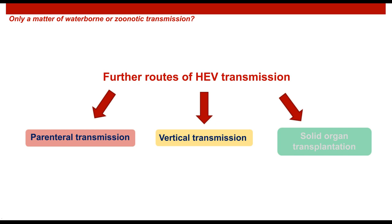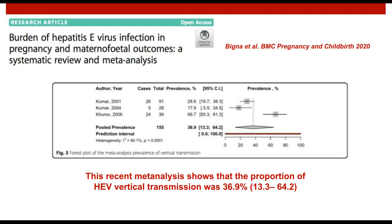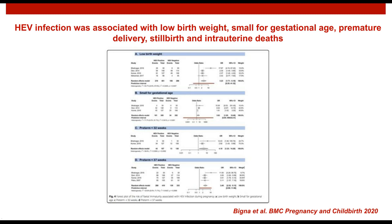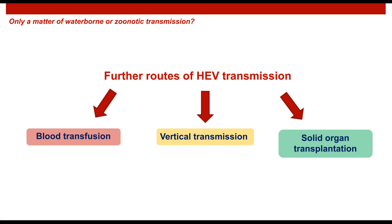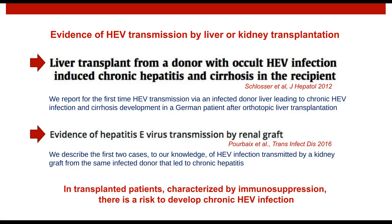Beyond parenteral transmission, HEV can also be transmitted vertically. A recent meta-analysis showed a quite high proportion of vertical transmission in pregnant women who acquired HEV infection — the risk of HEV transmission was around 37%. Vertical HEV transmission can be associated with low birth weight, premature delivery, stillbirth, or intrauterine abortion. There is also increasing evidence that HEV can be transmitted by solid organ transplantation.